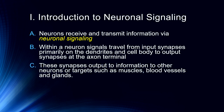These synapses output information to other neurons or targets such as muscles, blood vessels, glands, and organs. For example, if you go to reach out and grab your coffee, you will use a neuron that will fire and cause muscle fibers to contract and release, and those will be calibrated by sensory neurons in your hand and arms. So all of this occurs throughout the body — that's how we really do everything, through this process.